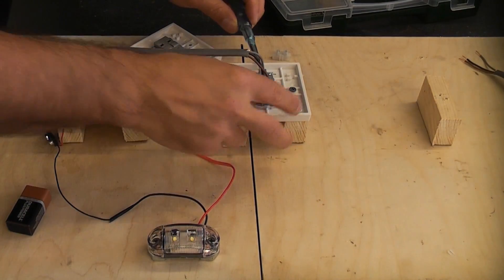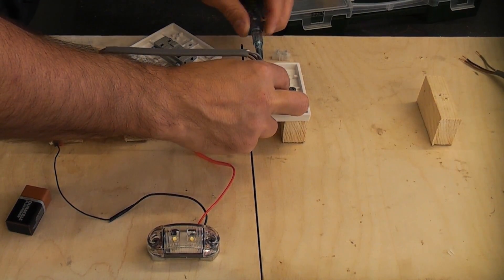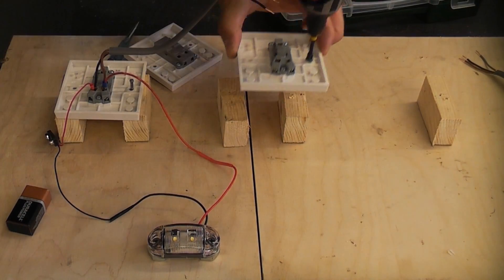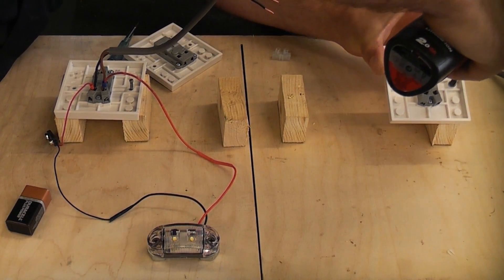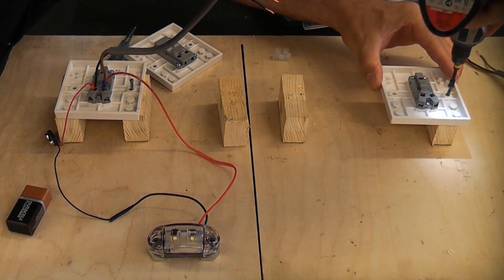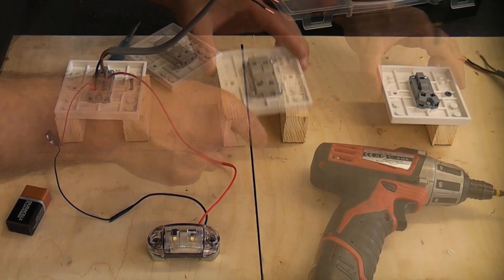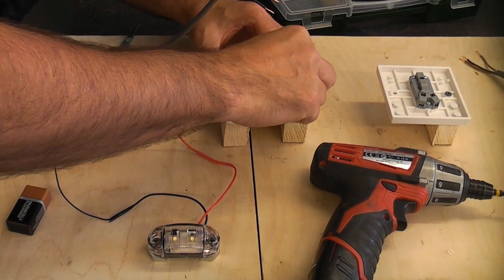Then I'm just going to undo these three wires on the second switch and then I'm just going to move that to the outside and then on the inside there I'll put the intermediate.